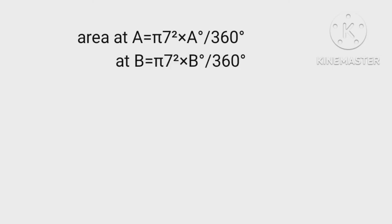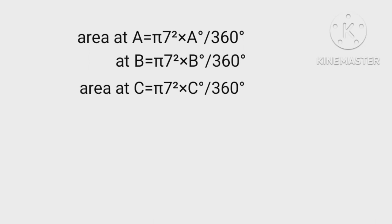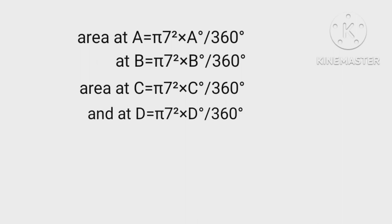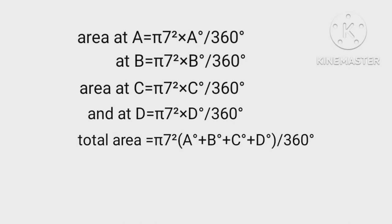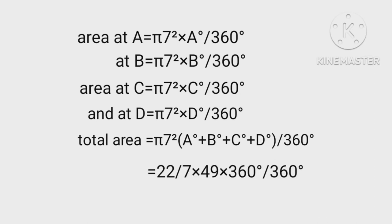Similarly, area at B equals pi times 7 squared times angle B upon 360 degrees. The combined area calculation gives 49 times 22 upon 7 times 360 degrees upon 360 degrees, which equals 154 square centimeters.